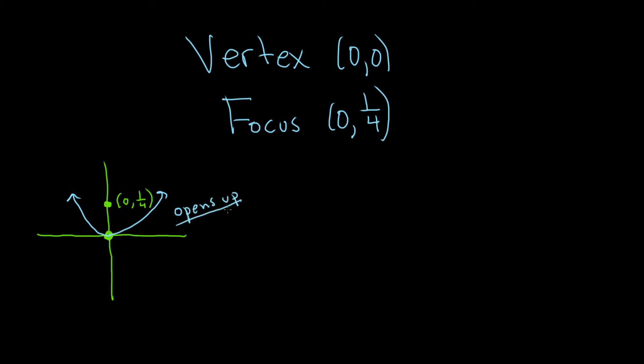The important thing here though is that now we know that it opens up. That tells us two things. One, it tells us the formula. Whenever it opens up and down, we know that the x is being squared. So that means the formula we're going to use is (x - h)² = 4c(y - k).